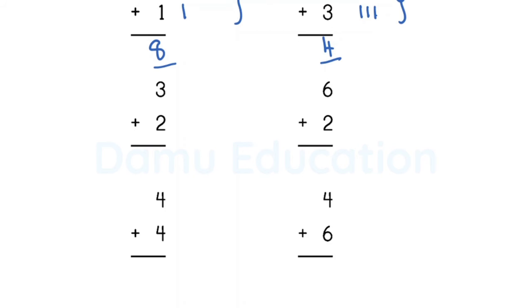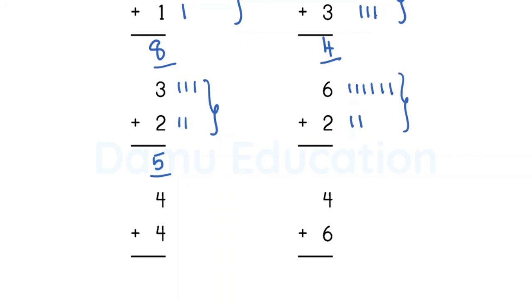For three plus two: draw three lines, then draw two lines. Whatever number is given, draw that many lines. Count all together: one, two, three, four, five. Final answer is five. For six plus two: draw six lines — one through six — then draw two lines. Count totally: one through eight. So eight is the answer.